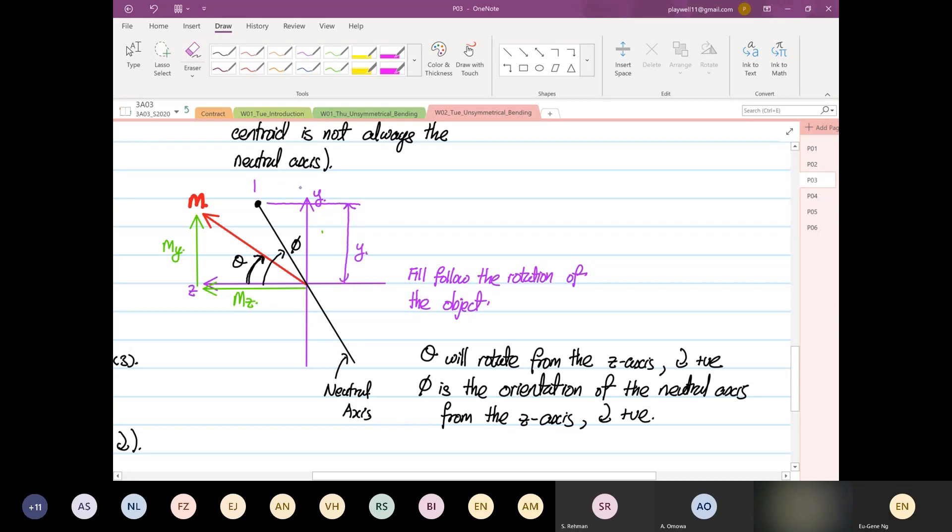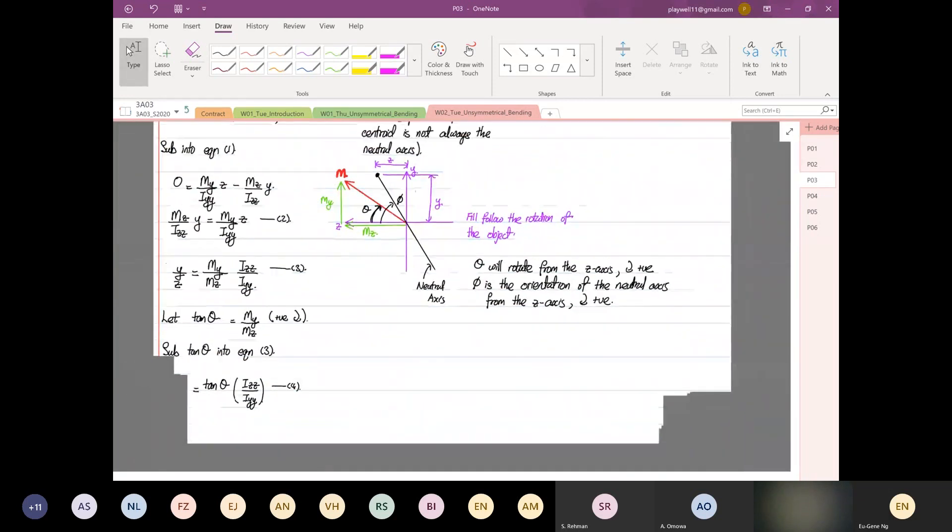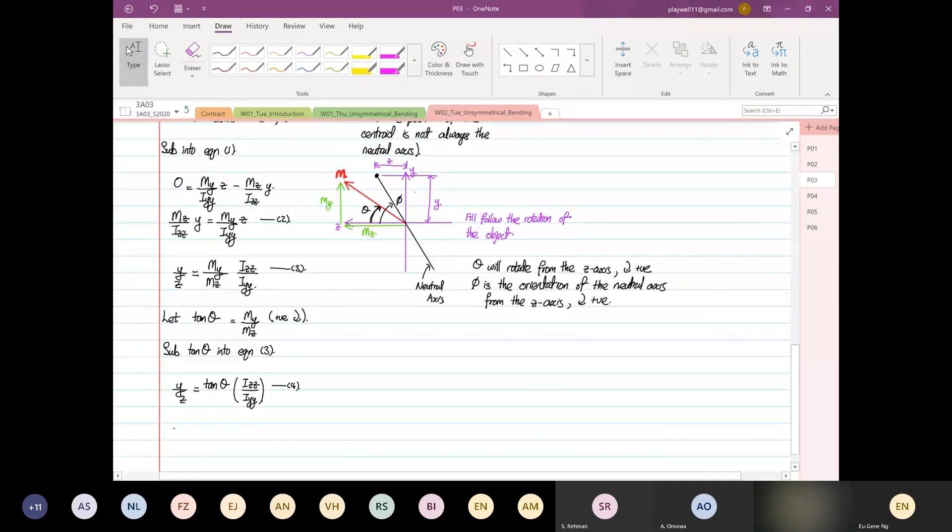And this position from here to here, this is your what? This is your Z. So we can form another relationship with this diagram over here, where tangent pi, tangent pi is equal to Y over Z.